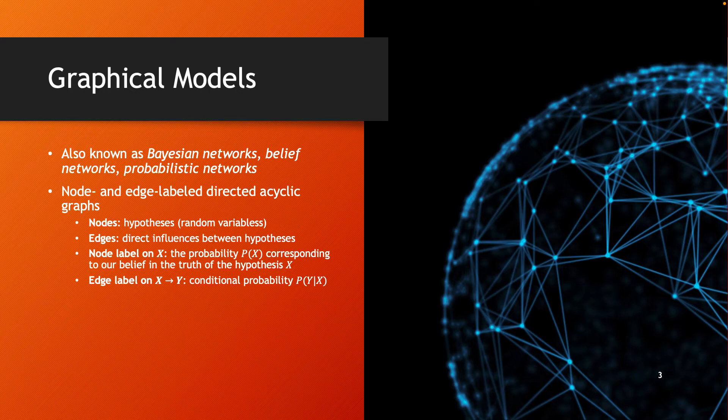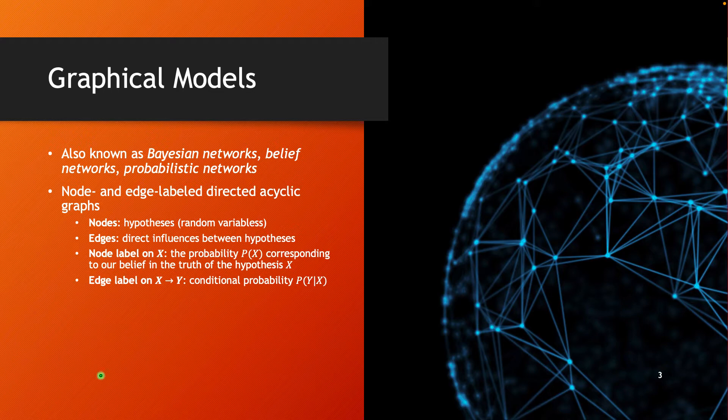Graphical models are described through directed acyclic graphs, and we have the nodes representing hypotheses, or in other words, the random variables of the model.